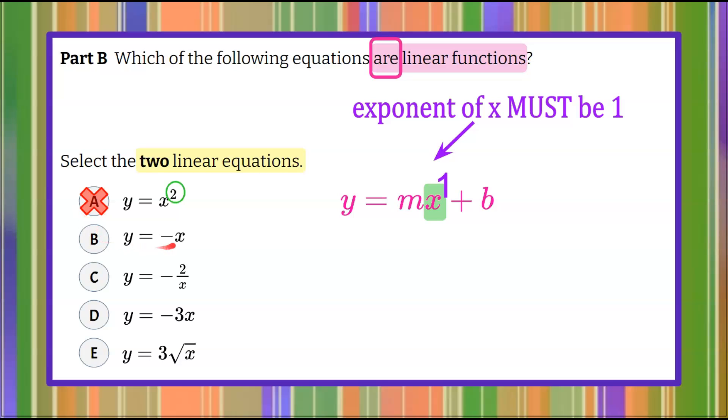B, y equals negative x. We do have an invisible 1 here, so b is a linear function. Looking at c,